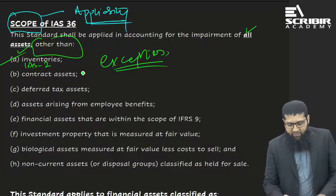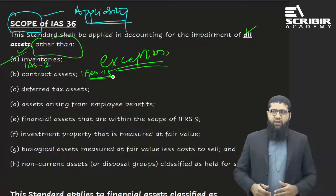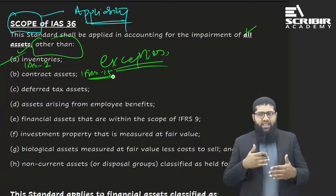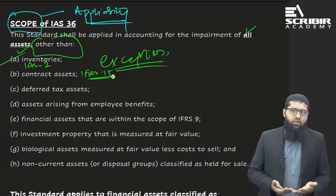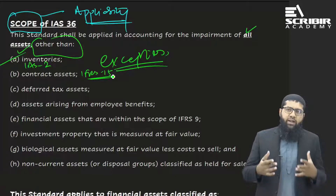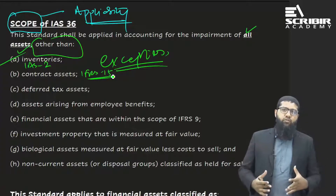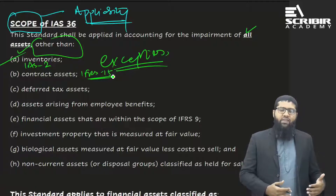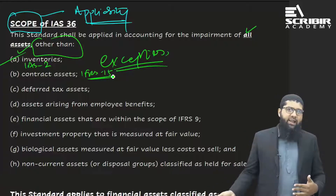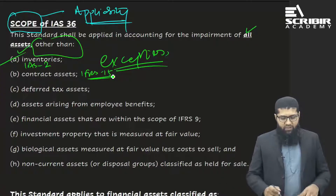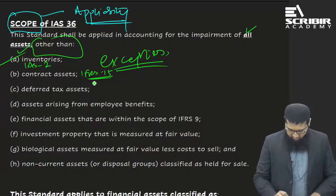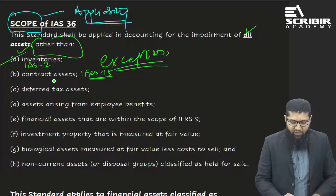Contract assets under IFRS 15, which is the revenue recognition accounting standard — IFRS 15 already gives guidance about the measurement of a contract asset, and that measurement already follows the concept of prudence. So there is no need for another application of IAS 36, and therefore IAS 36 is not applicable to contract assets under IFRS 15.